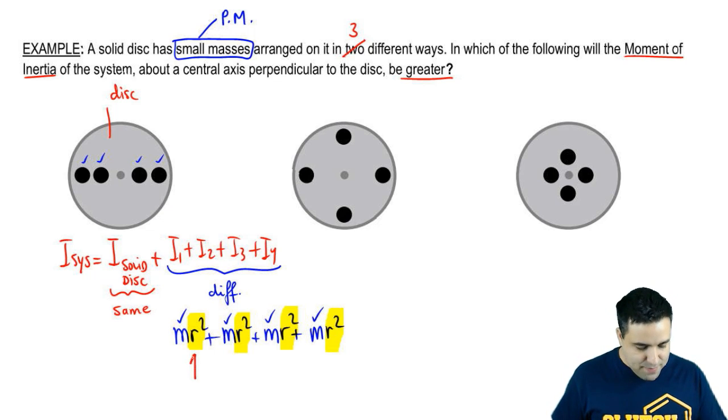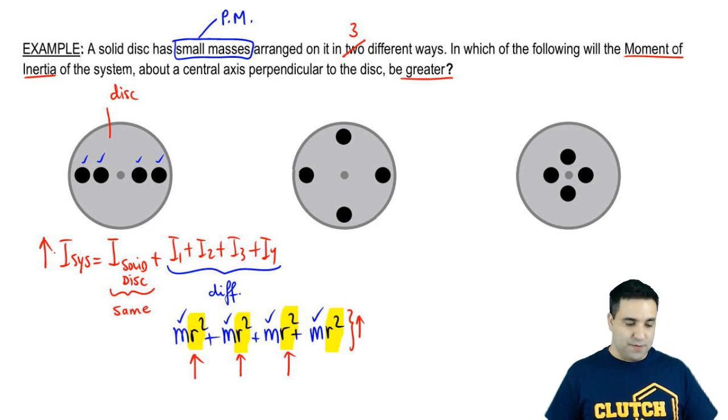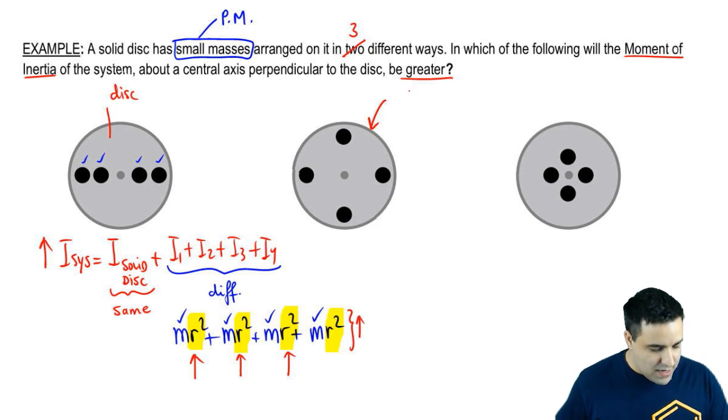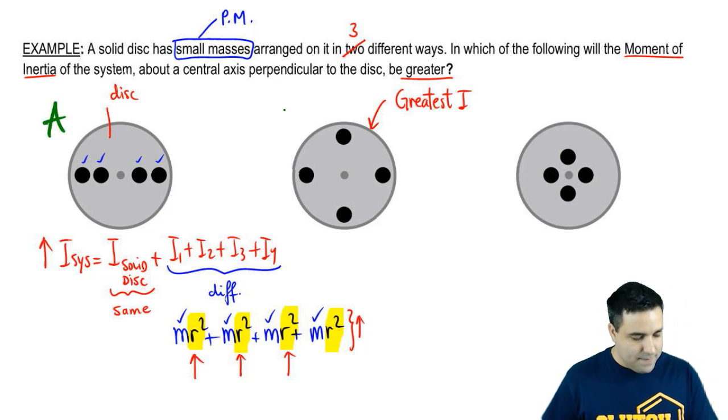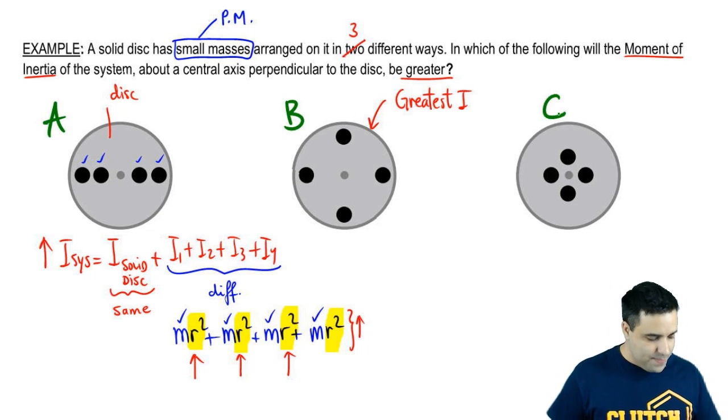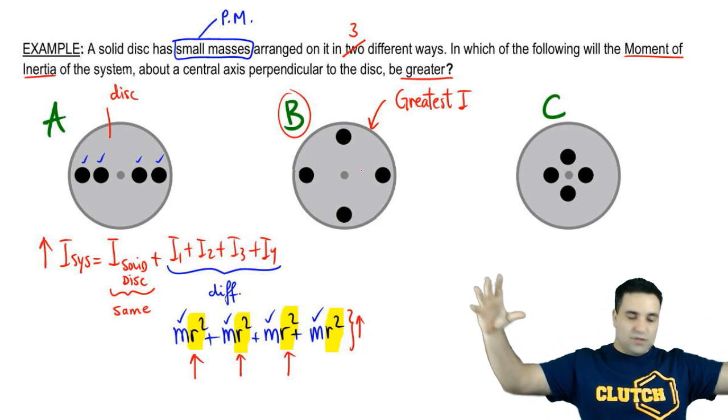So basically, the farther the masses are, the greater their individual moments of inertia will be, and the greater the total moment of inertia of the system will be. So this one has to be the one with the greatest I. So I'm going to call this A, B, and C. And B is the greater one.